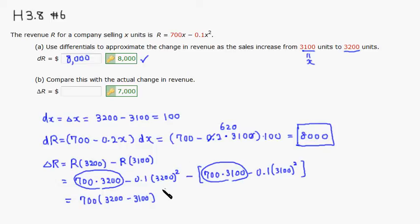It's going to be negative 0.1 in common, then you just have to do 3200 squared minus 3100 squared. This is going to be 100 here.